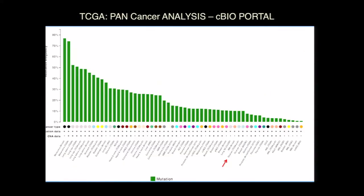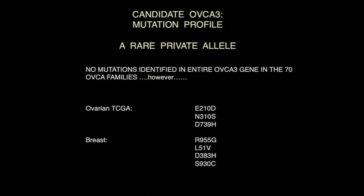We then looked at the pancancer data, taking all 15 genes from the Mutation Assessor and TCGA analyses and examining the distribution of mutations across cancers. We broke it down into the ovarian cancer data — one of these genes had about 6%, which we think is too high given its function. A couple of genes had some interesting distributions. One gene with three mutations found here is also mutated in breast cancer, which is interesting given that BRCA has mutations in both breast and ovarian cancer.